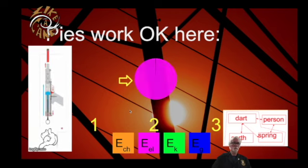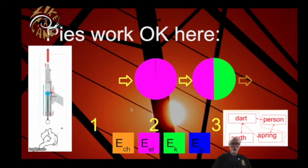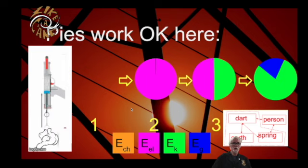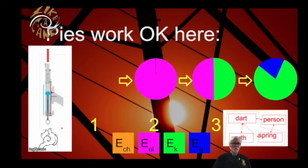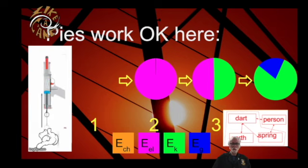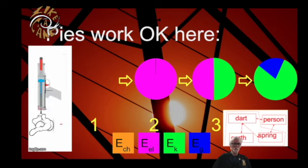Sometimes, even in an open system, pies work okay, because there's either no pie or a pie, like when we had the person outside the system and we were tracking energy without the chemical energy involved. The pies were the same size once they appeared, but there just was no pie at first in position one.